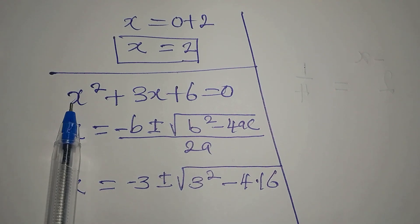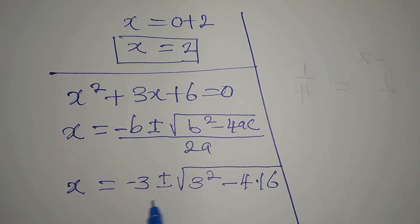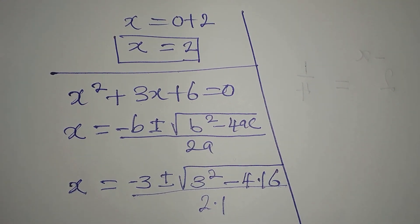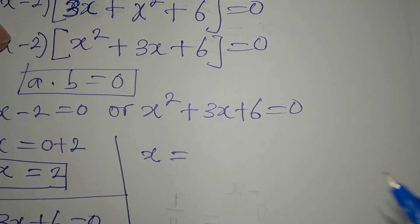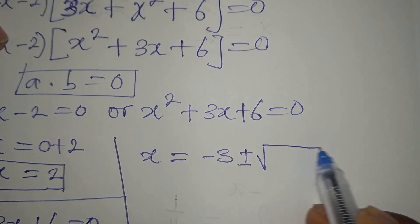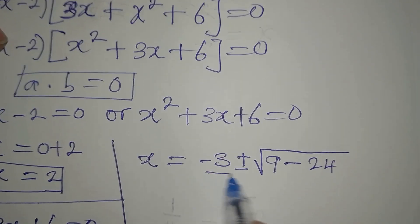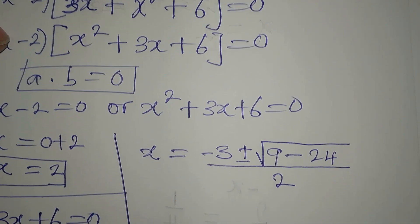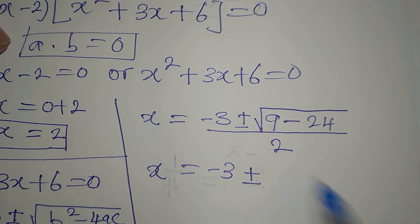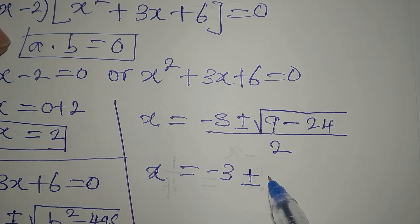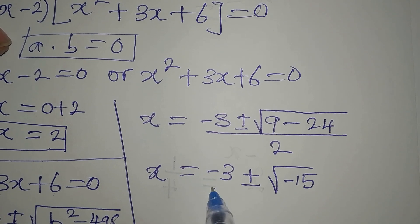Our a is the coefficient of x squared, which is 1; b is 3; and c is 6. So we divide by 2 times 1, which is 2. Continuing: x equals minus 3, plus or minus square root of 9 minus 24, all divided by 2. That gives square root of negative 15, divided by 2.